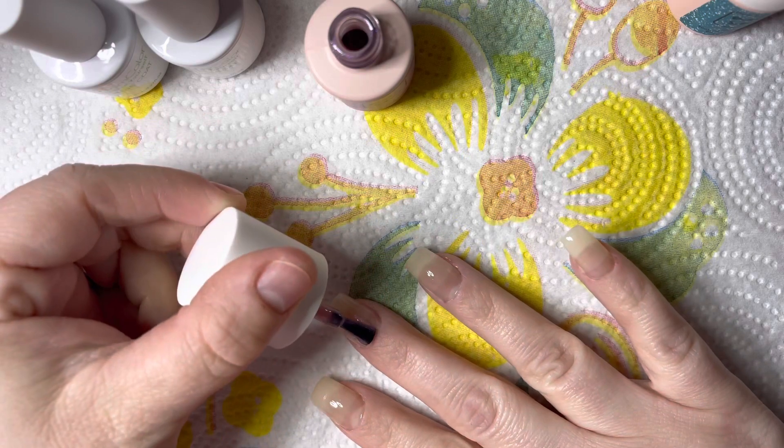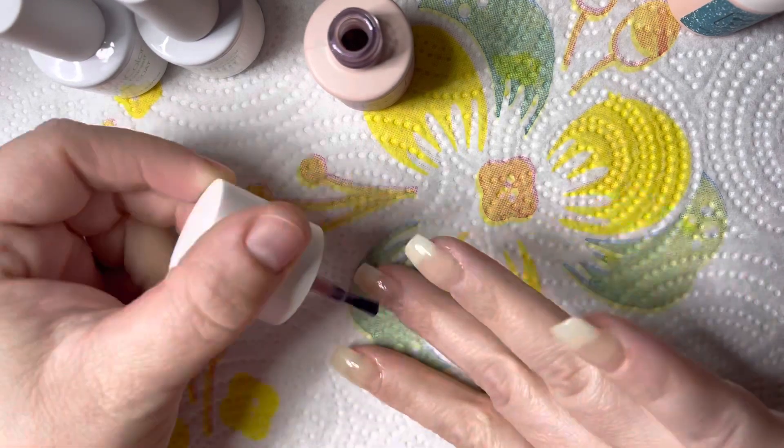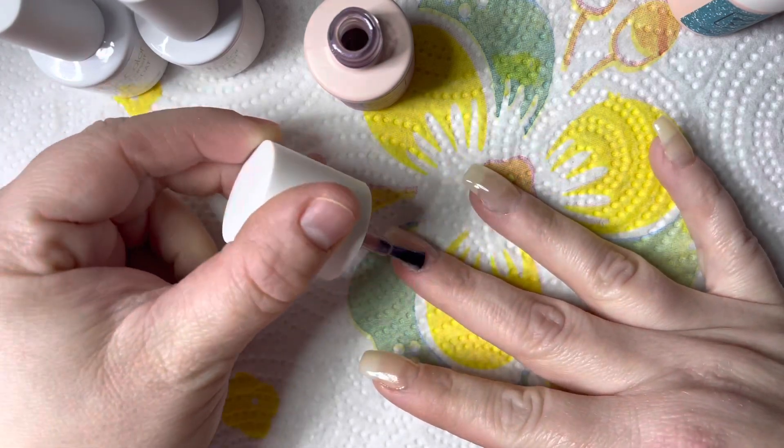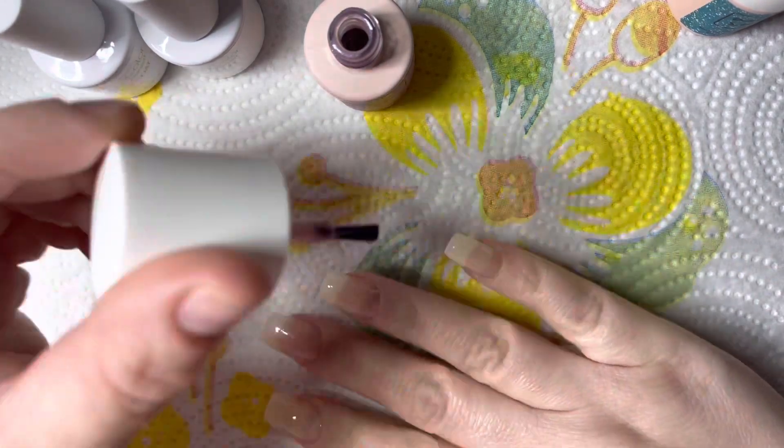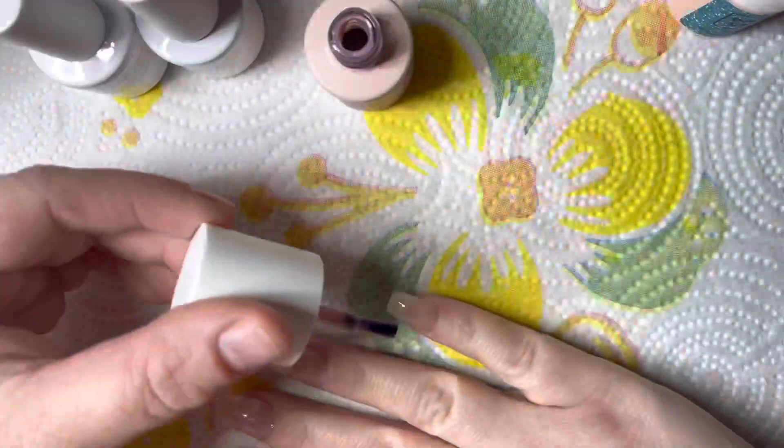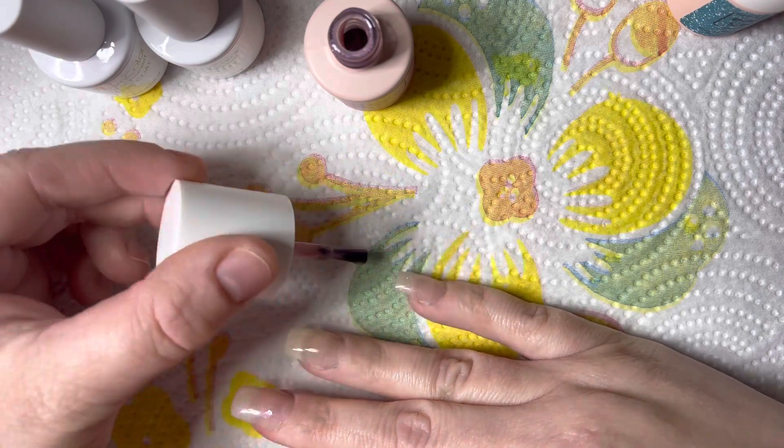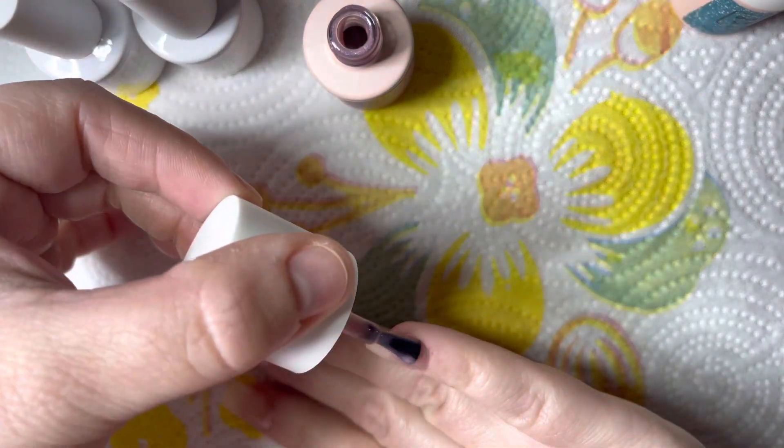Now I'm going in with this light, I guess it's like a shimmery purple lilac, almost a sheer color. Now I'm not sure, looking at it now, if it was the monomer that yellowed or if it was the natural tips that had that yellow tint to it.